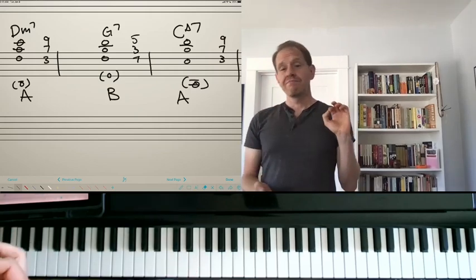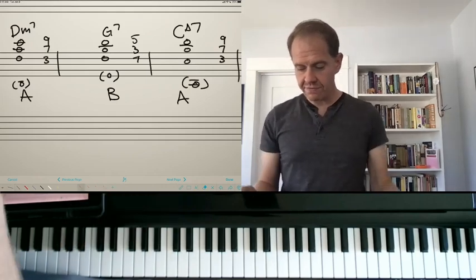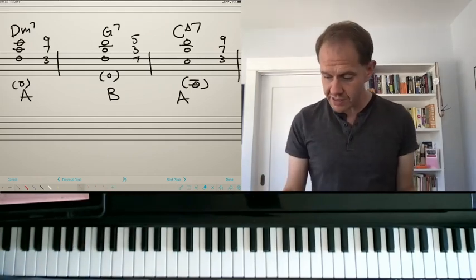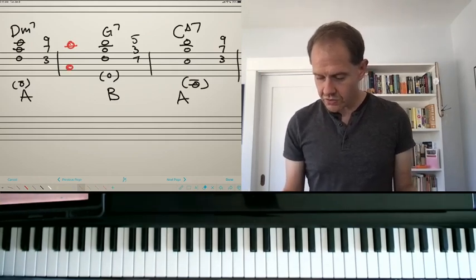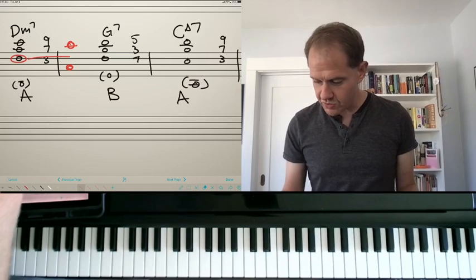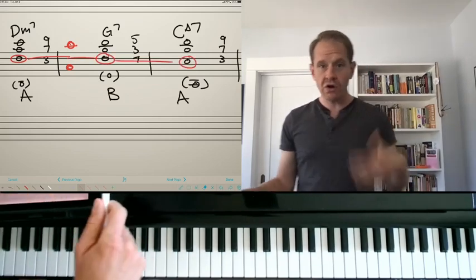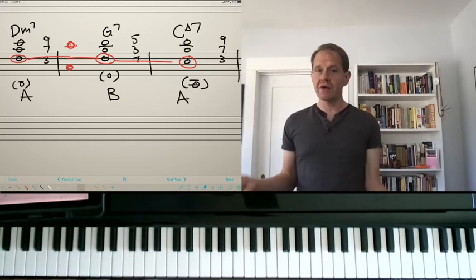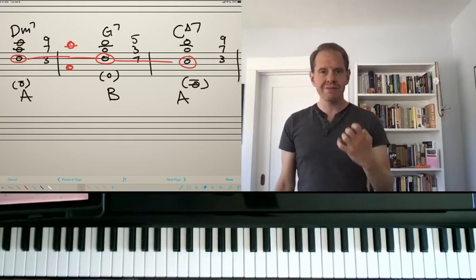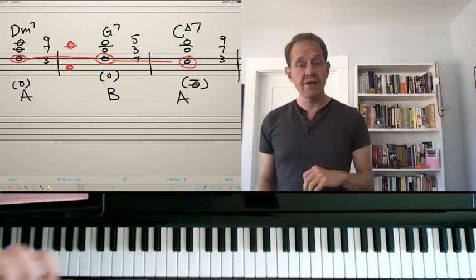Now, notice our rule about staying in between C3 and C4 with the lowest note of your voicing. It still holds. So this F is right in between these. This F stays in between, and this E stays in between. If you start going lower than that, it's going to get muddy. If you go higher, you're going to be in the range of the melody, and it's not going to be a very supportive resonant chord. It really wants to be in that range.